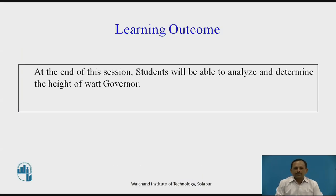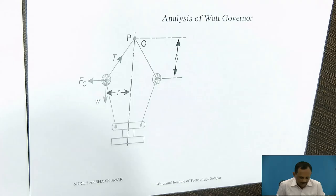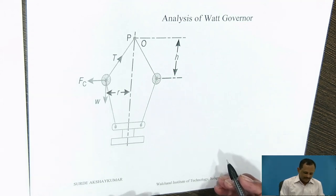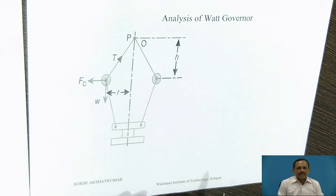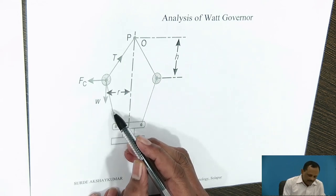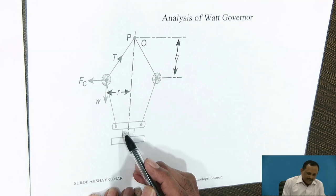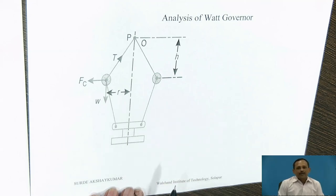Learning Outcome: At the end of this session, the student will be able to analyze and determine the height of the VAT Governor. The VAT Governor is a simple form of a centrifugal governor, which is a simple conical pendulum governor in which the links are connected to a sleeve of negligible mass.